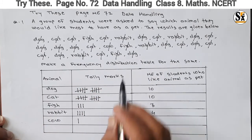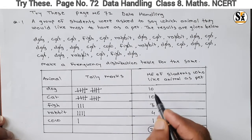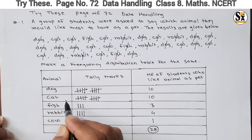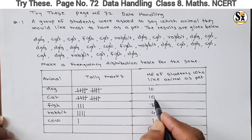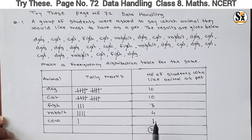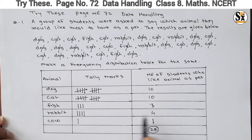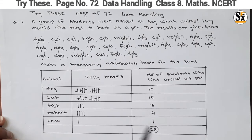So this is the frequency distribution table, which is what was asked. These are the observations, and we can make our conclusion from this table. Dog and cat are the two animals which are equally liked as a pet and are the most popular pet animals. Cow is the least preferred — only one student likes cow as a pet. Rabbit has four and fish has three. The table makes it easy to draw conclusions.